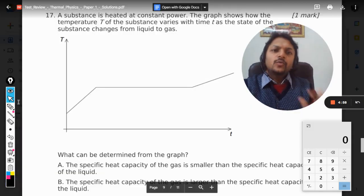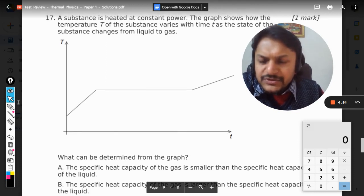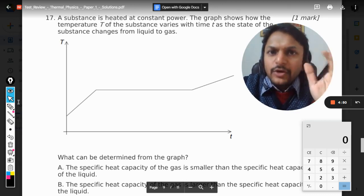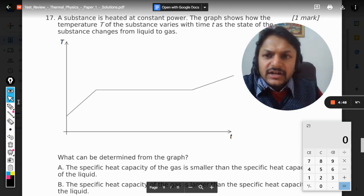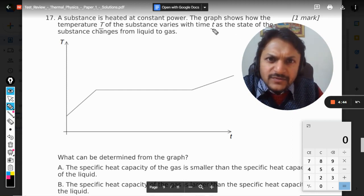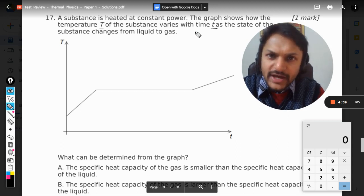Okay, dear students, let's see what is there in this question. Reading this: a substance is heated at constant power, so the rate of giving heat is constant. The graph shows how the temperature T of the substance varies with time t as the state of the substance changes from liquid to gas.